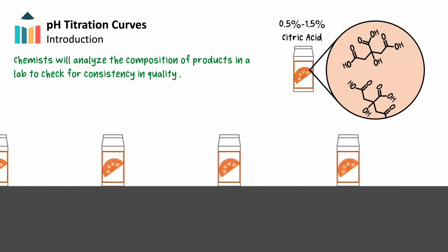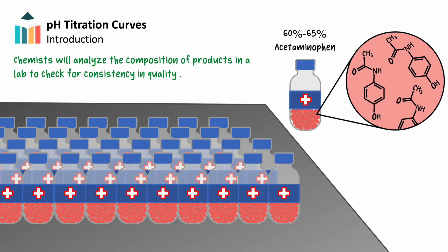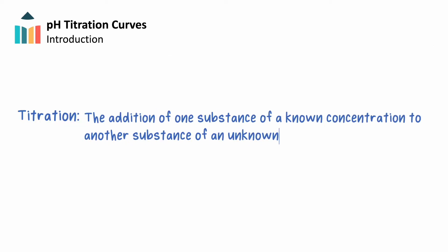Or, if you worked in pharmaceuticals, you might test that a crucial medication delivers the exact dosage needed for effective treatment. These outcomes rely on an essential technique in chemistry known as titration, that is, the precise addition of one substance of a known concentration to another substance with an unknown concentration.